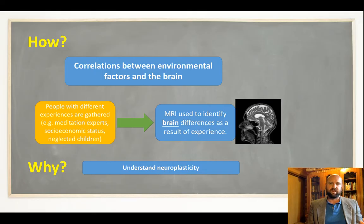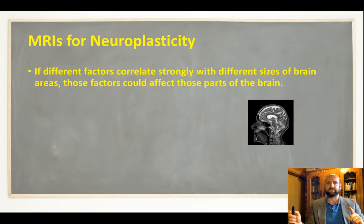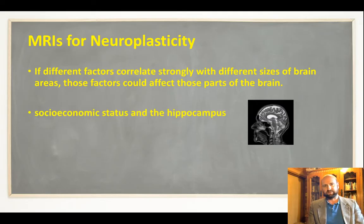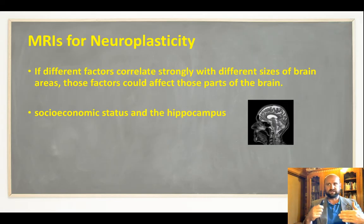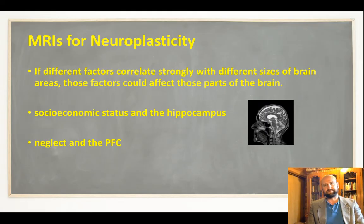This helps us understand neuroplasticity — we can hypothesize that environmental factors are affecting particular parts of the brain. If those factors have a strong enough correlation, we can say maybe those factors could affect those parts of the brain. It is important that these are correlations, not causal relationships, because we're not controlling all the extraneous variables. For example, lower socio-economic status is correlated with smaller hippocampal development — the hypothesis being that higher stress increases cortisol, which could affect the hippocampus. Similarly, more neglect as a child is correlated with a smaller prefrontal cortex. So here we're looking at neuroplasticity and how environmental factors affect the brain.